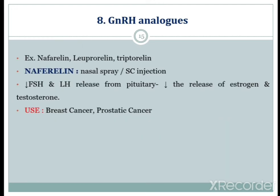The next subclass is gonadotropin-releasing hormone analogs, abbreviated as GnRH analogs. Examples are nafarelin, leuprorelin, and triptorelin. The nasal spray as well as subcutaneous injections are available for these drugs. They act by decreasing FSH and LH release by the pituitary gland, and also decrease the release of estrogen and testosterone, acting as anti-cancer agents useful in breast cancer and prostate cancer.